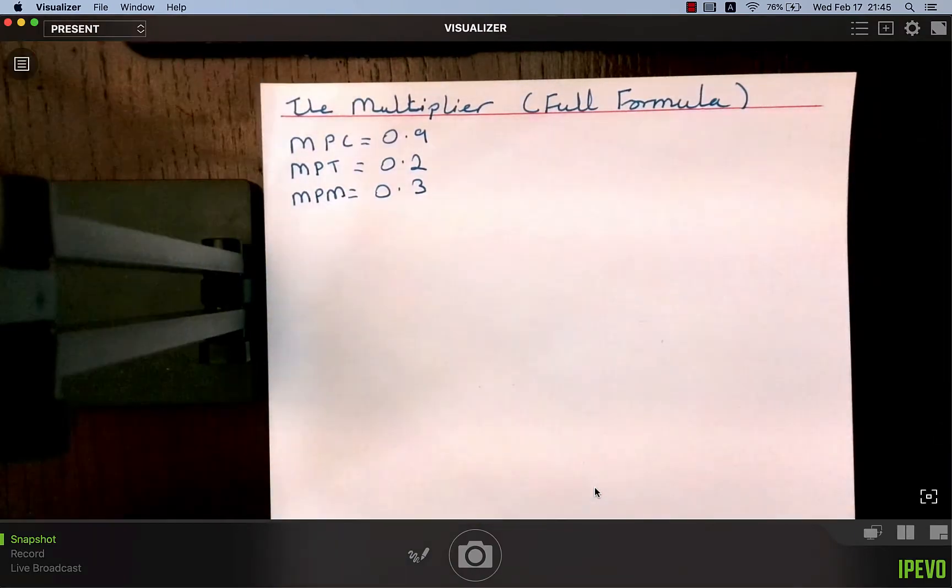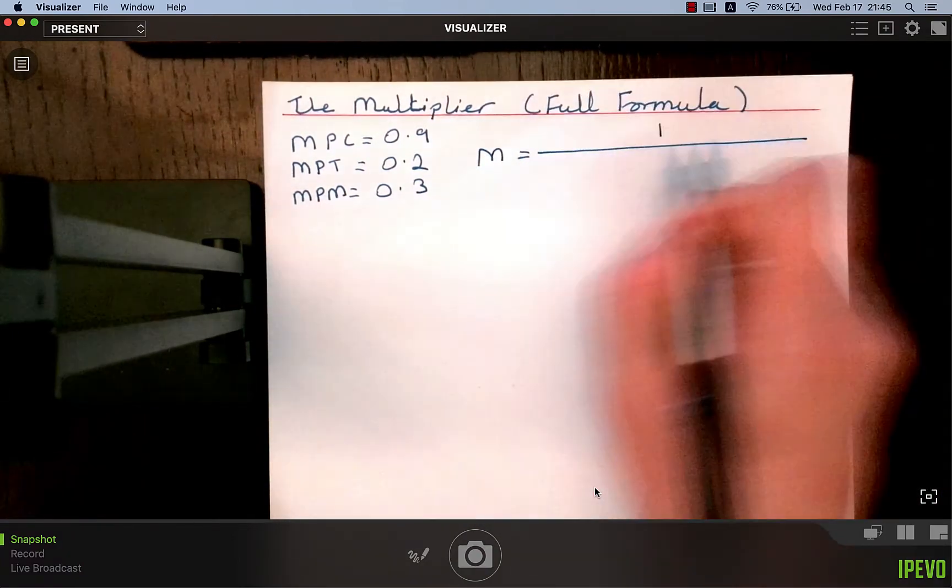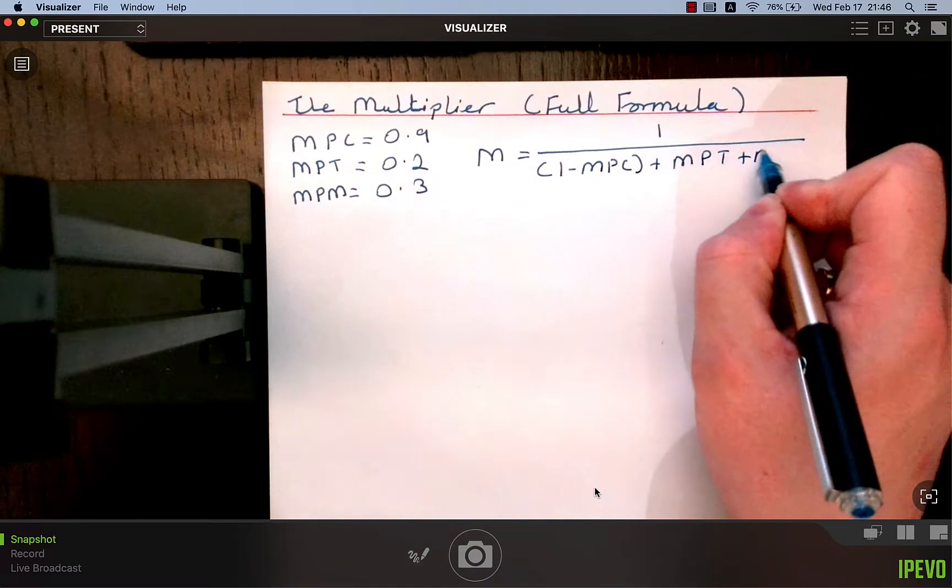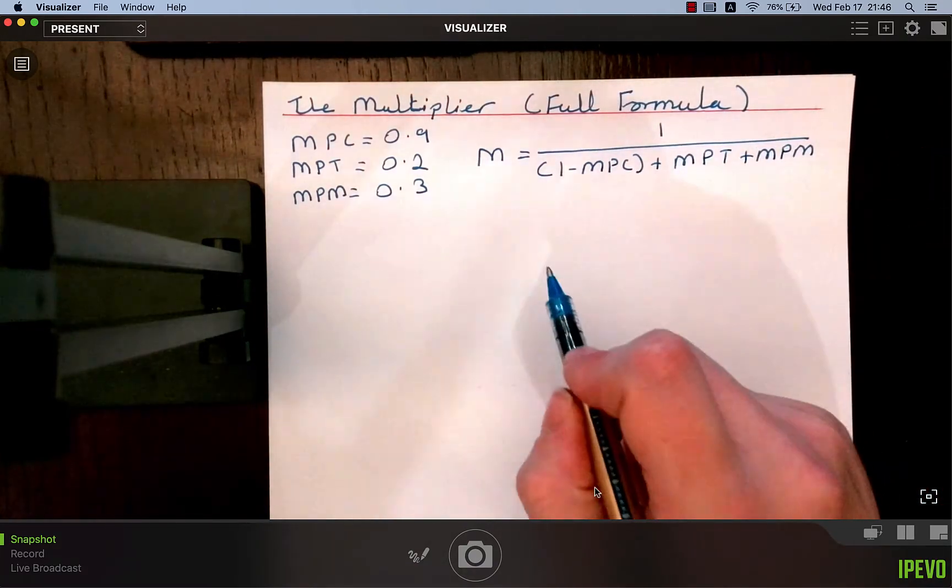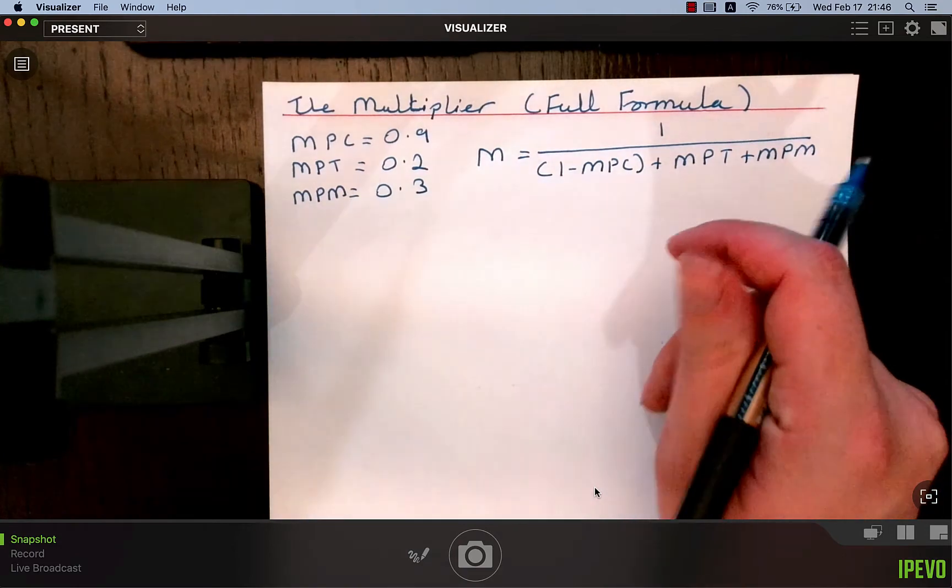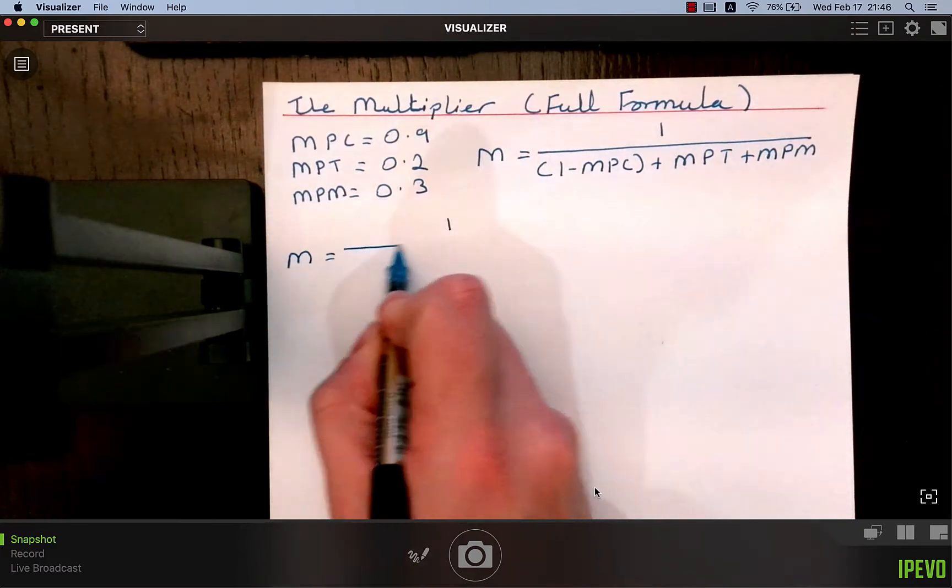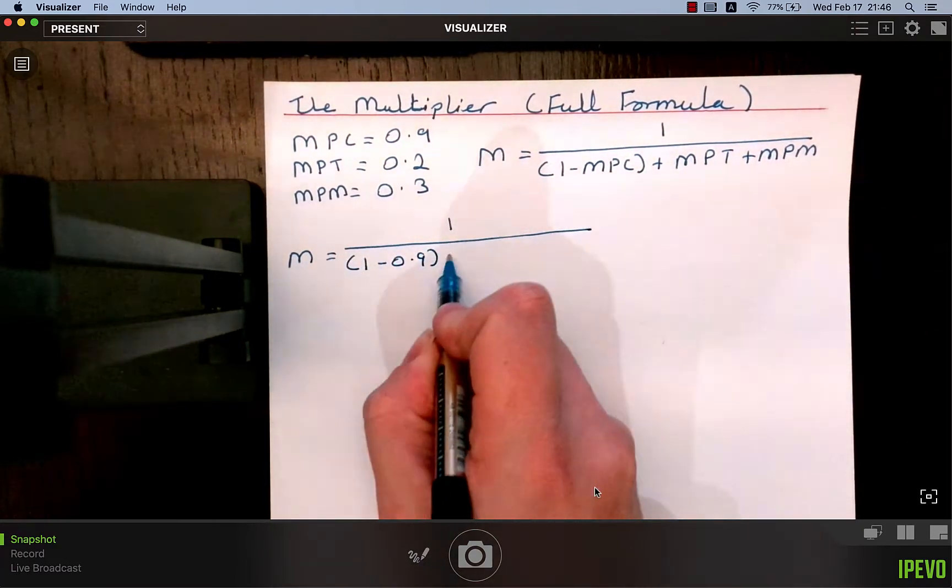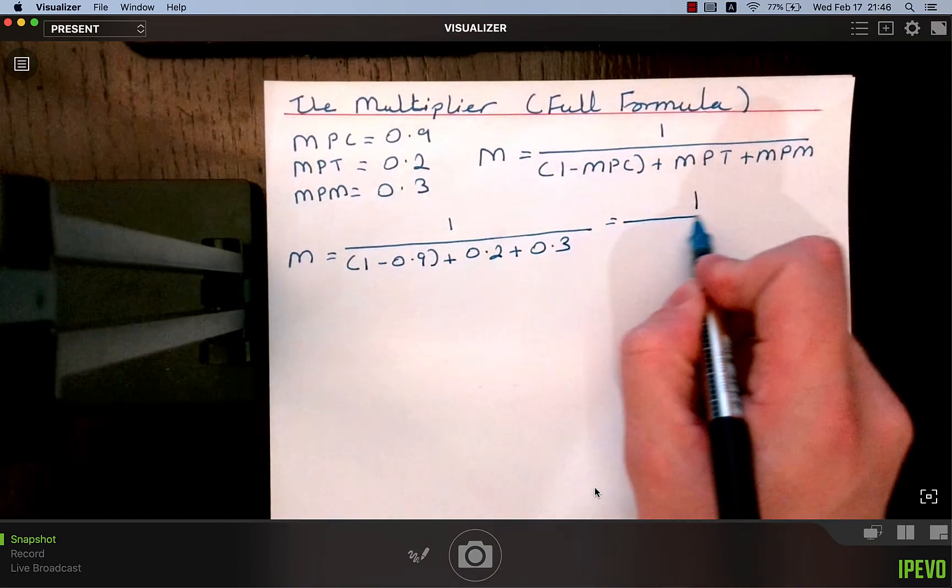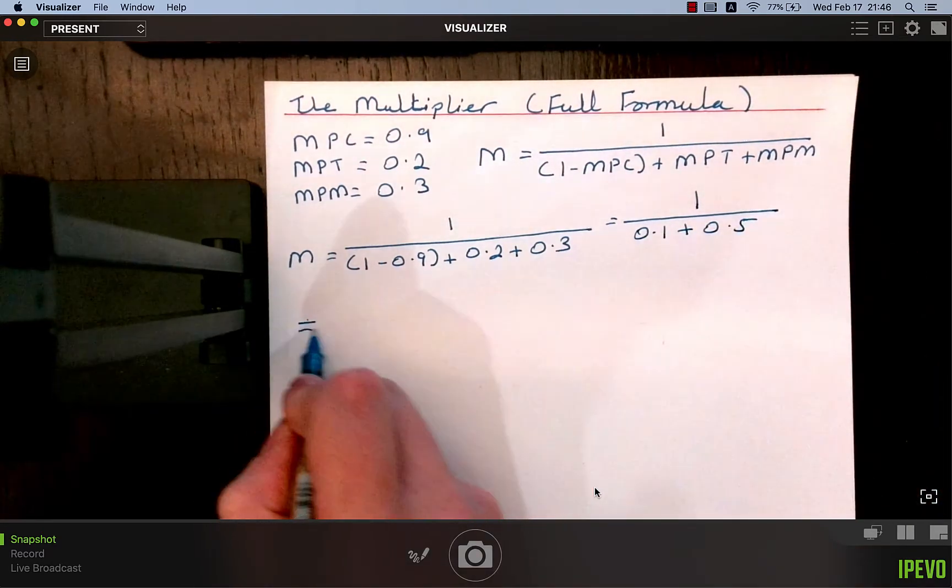The formula for the multiplier equals 1 over 1 minus MPC plus MPT plus MPM. The order doesn't matter. So the multiplier equals 1 over 1 minus 0.9 plus 0.2 plus 0.3, which equals 1 over 0.1 plus 0.5, which equals 1 over 0.6.